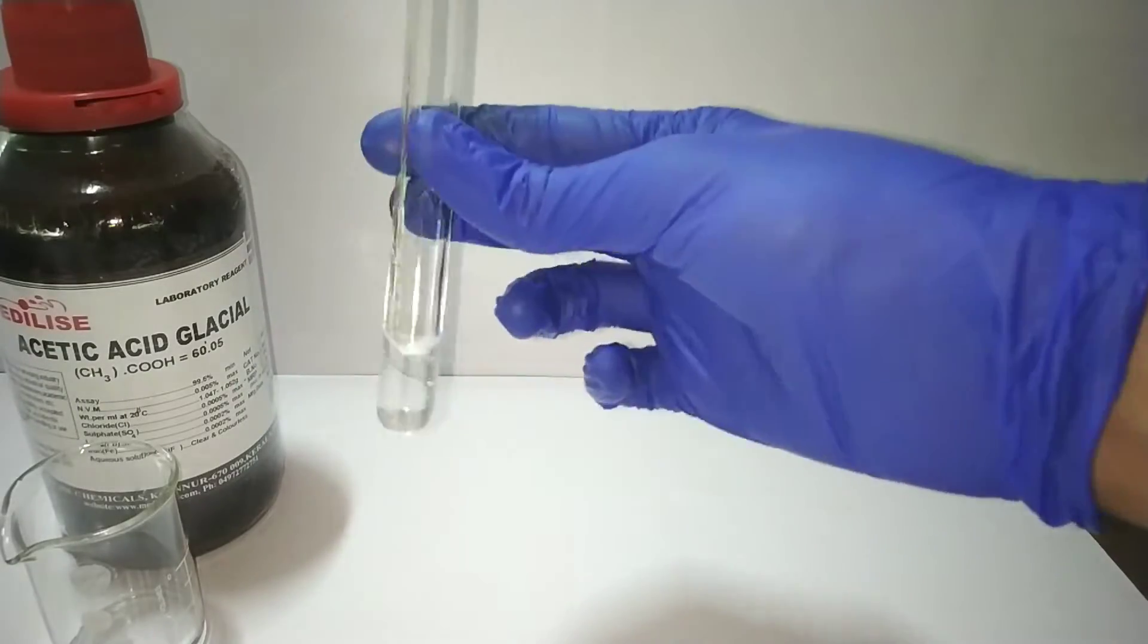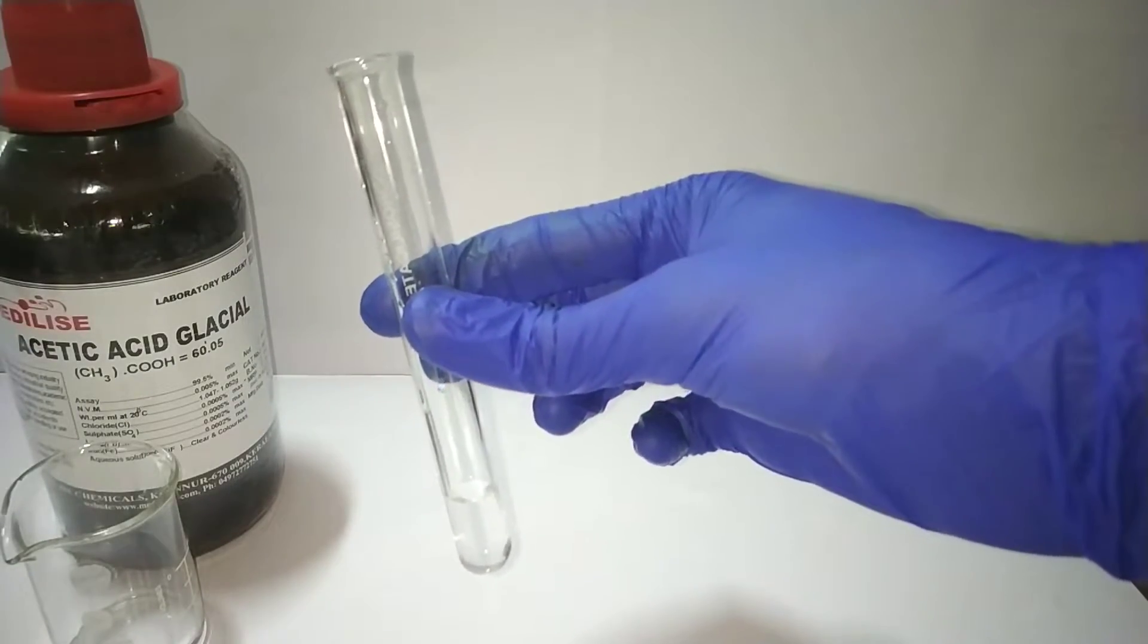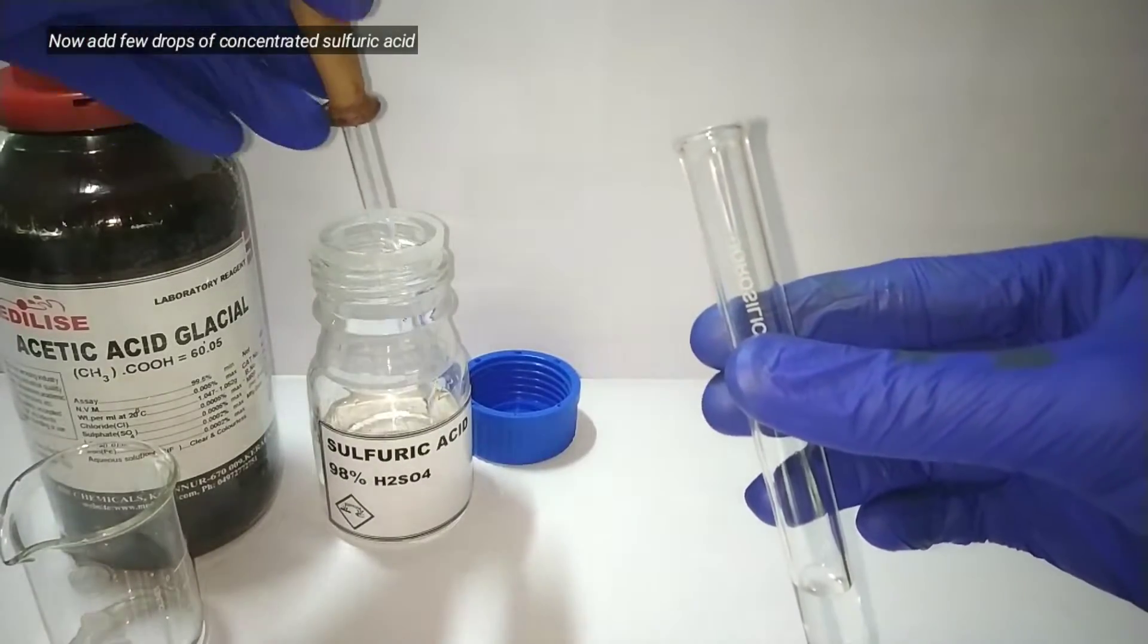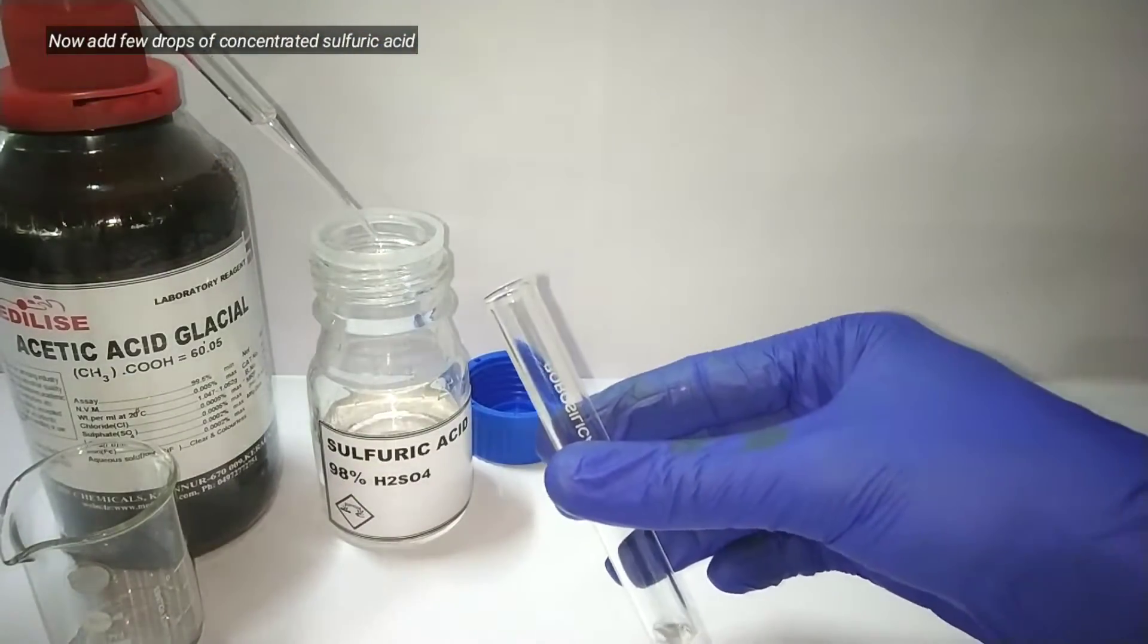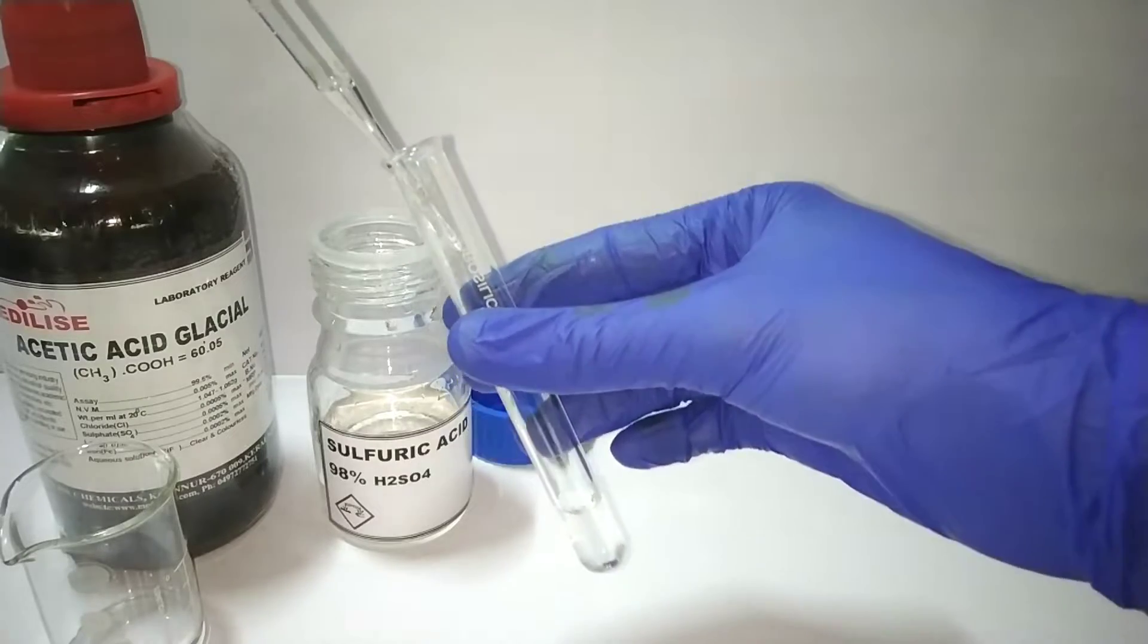Then we mix the compounds by shaking. Now add three to four drops of concentrated sulfuric acid into the test tube and mix the test tube well.